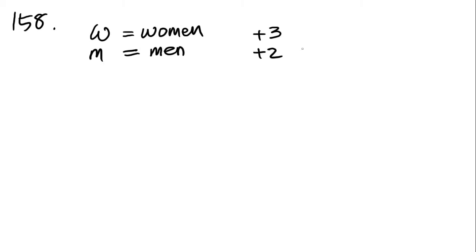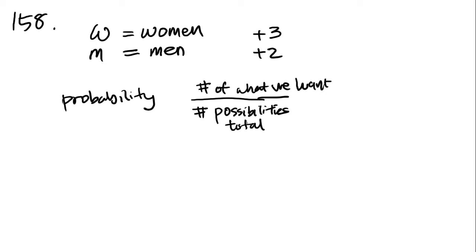And one person is selected at random from the enlarged committee, and the probability that a woman is selected can be represented by... This is a probability question. The way that you figure out probability is you're going to look for the number of possibilities, so total possibilities, over the number of what we want.